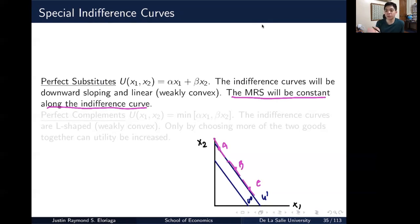Again, because you are just willing to substitute one for the other freely. So the indifference curves do remain downward sloping but they are now weakly convex. They are basically linear in this particular case. So that's the case for a perfect substitute.